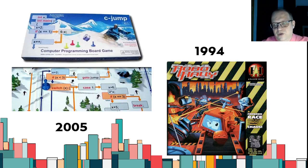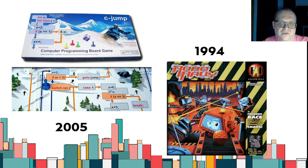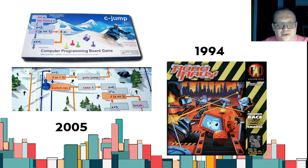Позже появились более сложные игры, уже не только детские. Например, Put All Put Game — ходилка, рассчитанная на старших школьников и студентов, где нужно идти по коду программы на Basic. Data Processing — игра с блок-схемами в качестве игрового поля. Я считаю, что современные интересные игры начались с 1994 года — с легендарной игры Ричарда Гарфилда Robo Rally: первой игры на программирование роботов. Автор сам называл её «игрой про управляемый хаос».